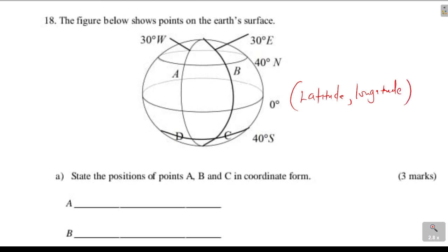So let's go to A. A is located on latitude 40 degrees north and longitude 30 degrees west. That is how we give the position.